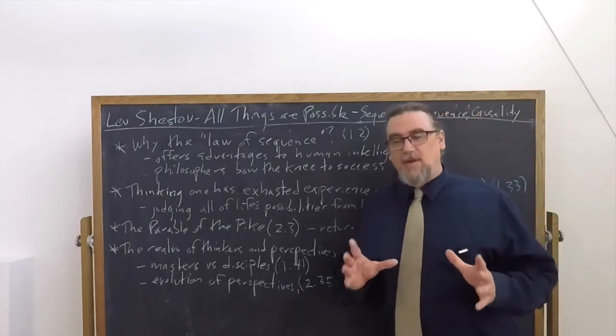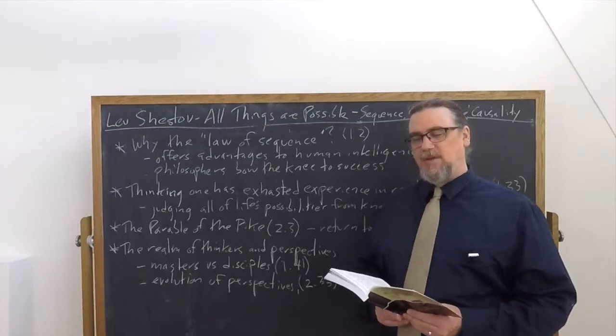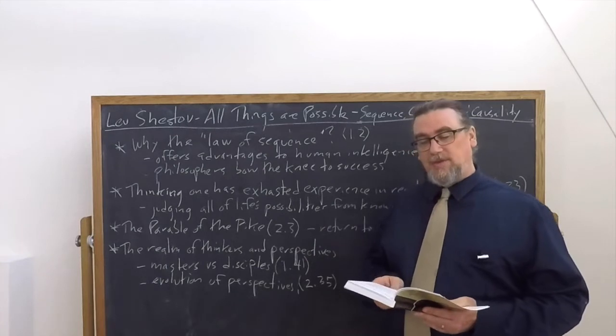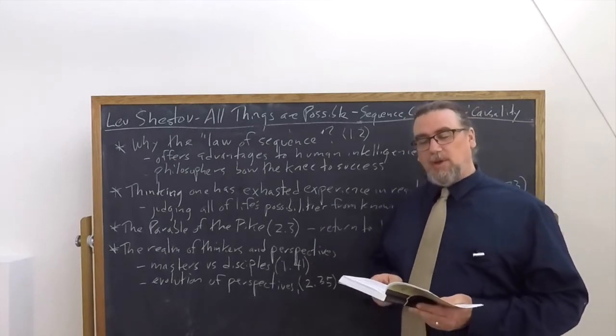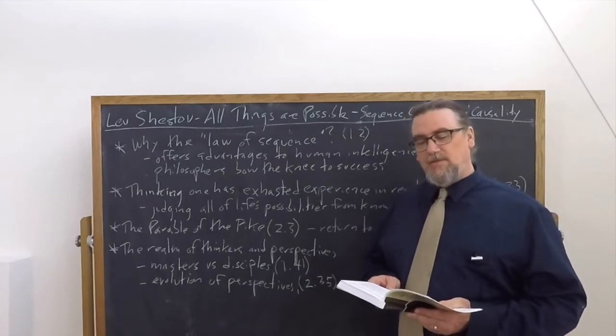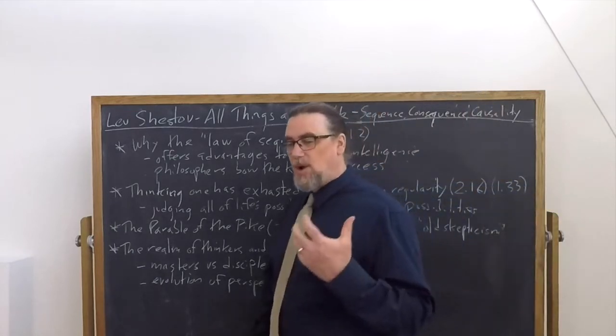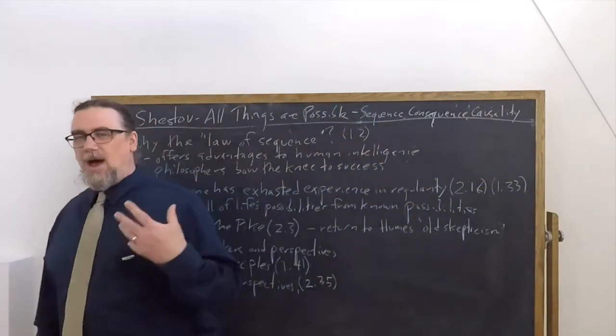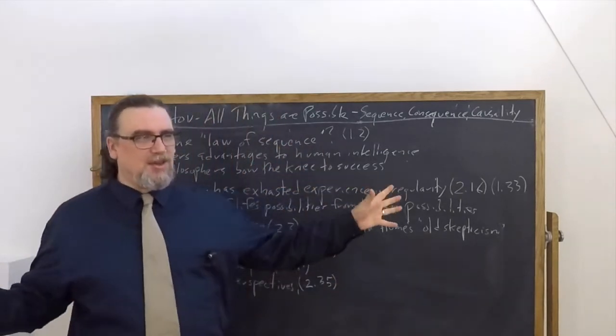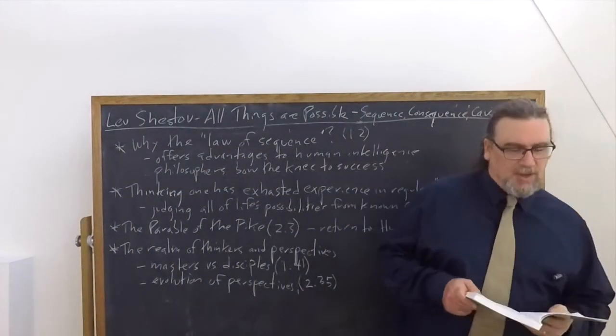In the very beginning of All Things Are Possible, he's got a very interesting discussion of this law of sequence, of things following each other in regular order. He says it seems so plausible, so obvious, that we're tempted to look for its origin not in the realities of actual life, but in the promptings of the human mind. This is the idea that causality is in some way a priori, a necessary way in which we see the universe and connect experiences together.